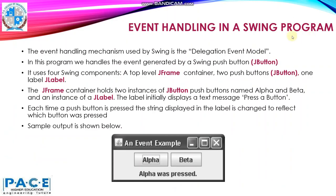The event handling mechanism used by Swing is the delegation event model. In this program, we handle the event generated by a Swing push button. We will be creating a GUI in which we will be creating a top-level JFrame container, and we will put the title over here — an event example.